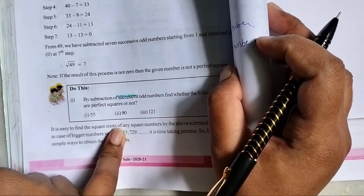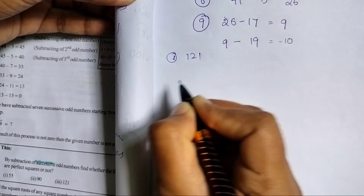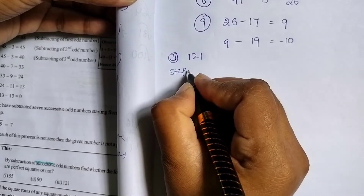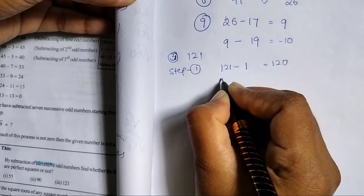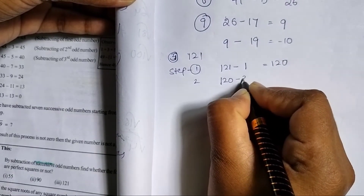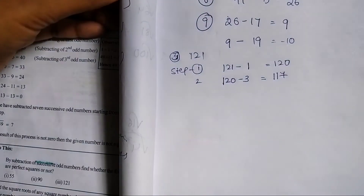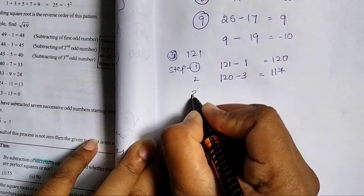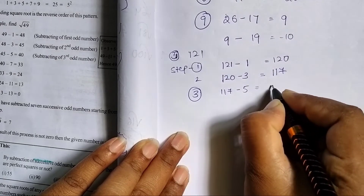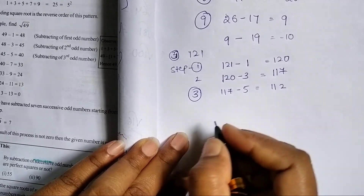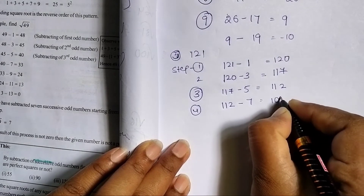Third question: 121. Step 1: 121 minus 1 equals 120. Step 2: 120 minus 3 equals 117. Step 3: 117 minus 5 equals 112. Step 4: 112 minus 7 equals 105. We have odd numbers being subtracted one by one.